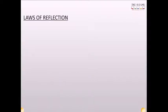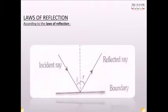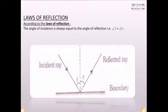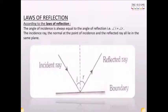Laws of reflection: According to the laws of reflection, the angle of incidence is always equal to the angle of reflection, that is, angle I equals angle R. The incident ray, the normal at the point of incidence, and the reflected ray all lie in the same plane.